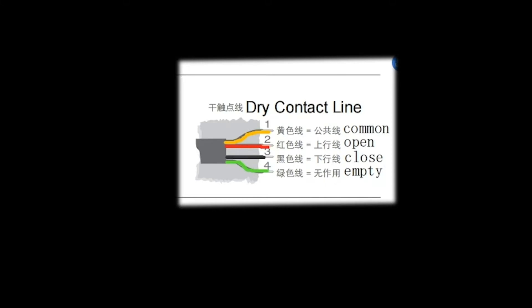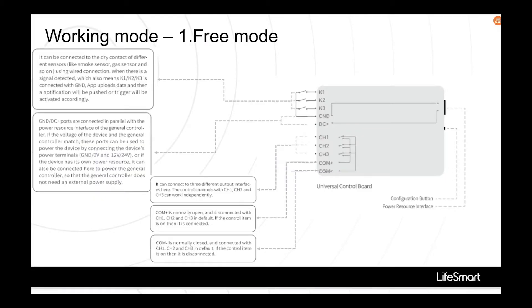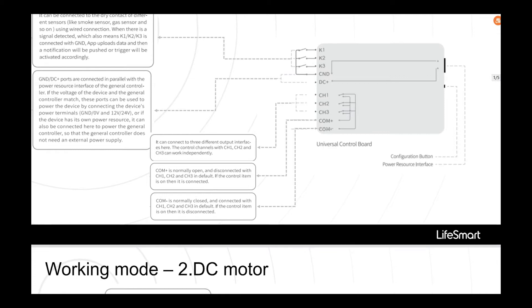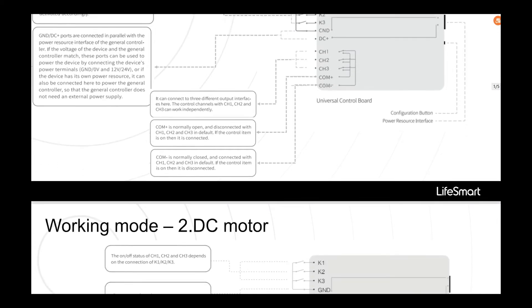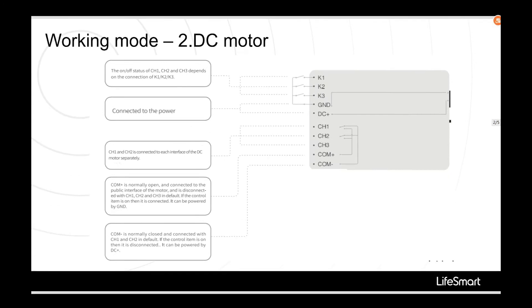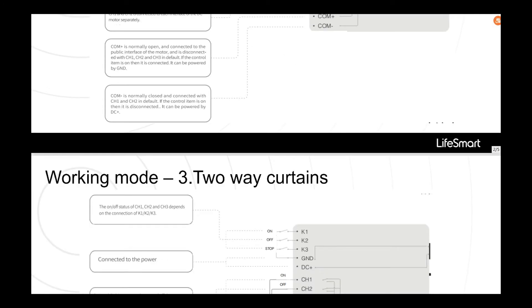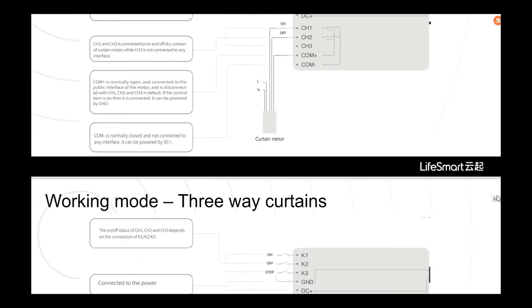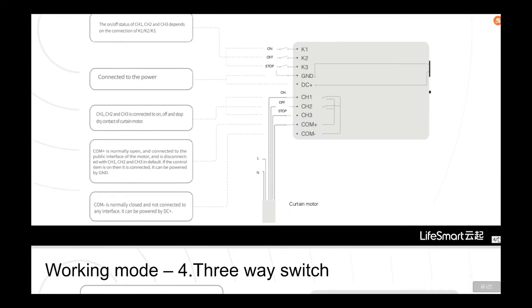Now let's look at the wiring diagram of the general controller. The different working modes of the general controller are developed according to different types of third-party dry contact devices and the corresponding dry contact interface documents. So it can cover most dry contact sensors, motors, and switches.